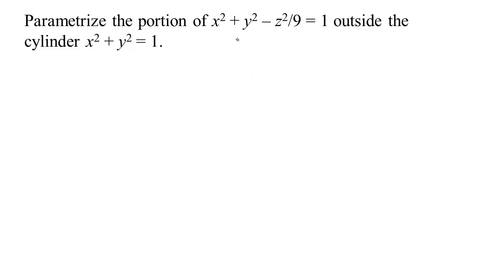Now we have a hyperboloid of one sheet, it turns out. I know it's a hyperboloid because if I freeze x as some constant, I have y squared minus z squared equals a constant — that's going to be a hyperbola. If I freeze y as some constant, I have x squared minus z squared equals some constant — that's going to be a hyperbola.